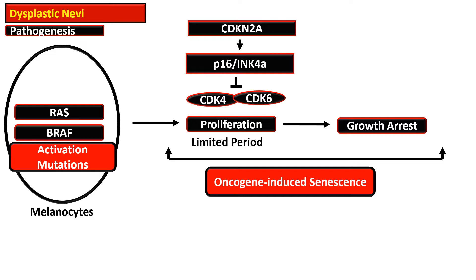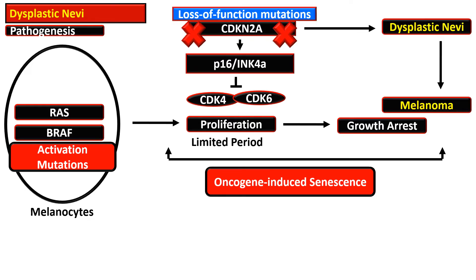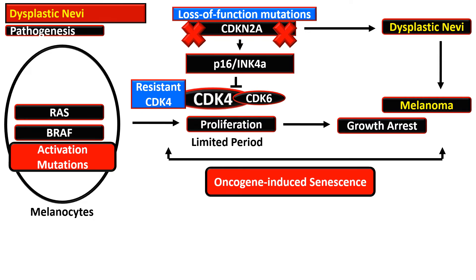Up to these steps, the events are quite similar to that of common nevi. What differentiates dysplastic nevi is that there is loss of cyclin-dependent kinase inhibitor 2A and loss-of-function mutation of this inhibitor. As a result, there is progression to dysplastic nevi or to melanoma. In some cases, there is expression of a resistant CDK4 that is not under the inhibitory control of p16.